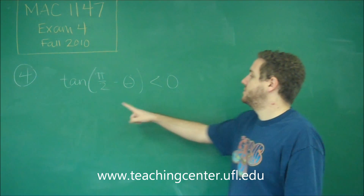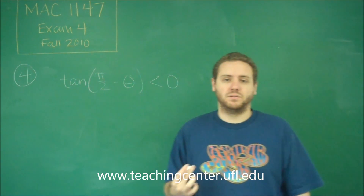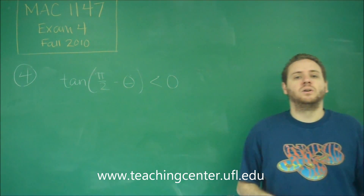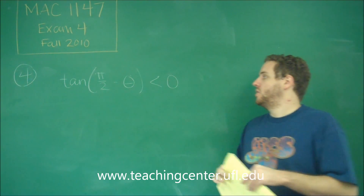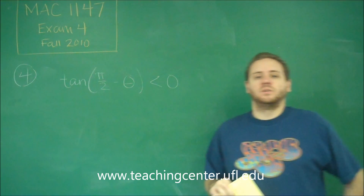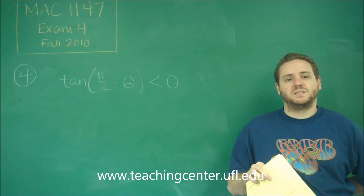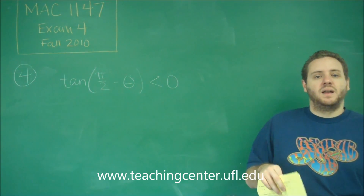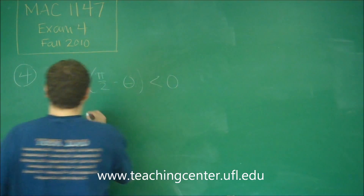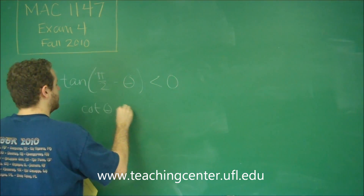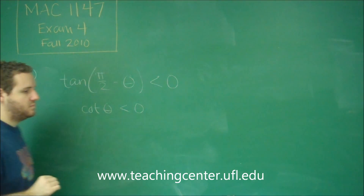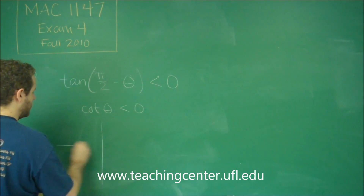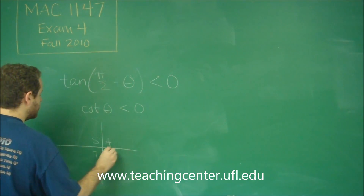Keep in mind, pi over two minus theta means the complementary angle. Pi over two is like 90, so 90 minus an angle would be its complementary angle. The tangent of a complementary angle is the same thing as the cotangent of that angle. Sine and cosine are equal for complementary angles — so are secant and cosecant, and tangent and cotangent. So really, this is just saying cotangent of theta is negative. We have A, S, T, C.